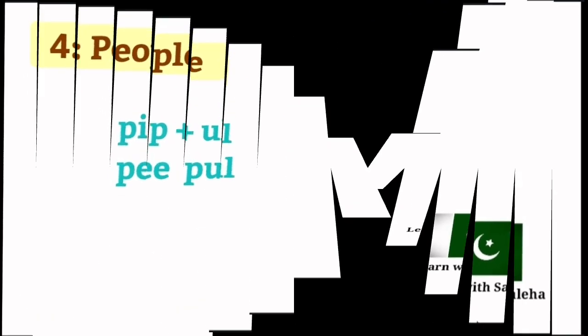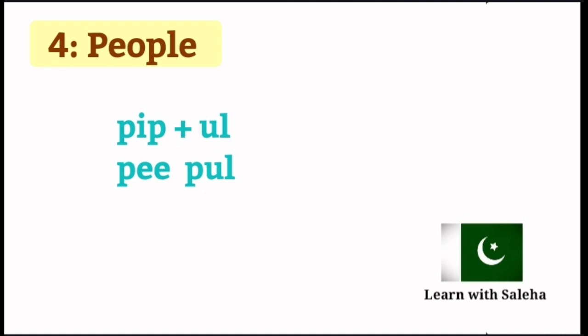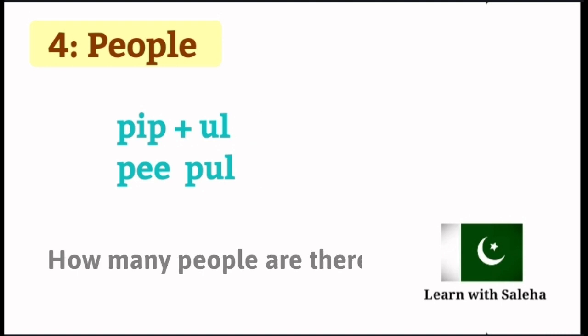Number 4: People. It's not people, it's people. Example sentence: How many people are there?